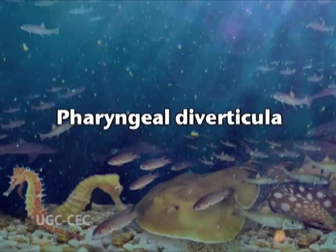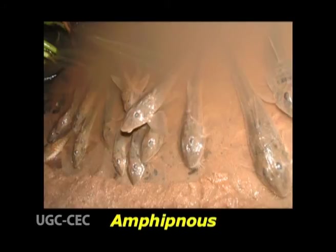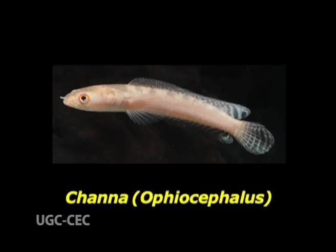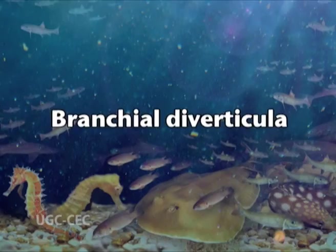Pharyngeal diverticula: these are a pair of simple sac-like outgrowths lined by vascular epithelium extending above the gills. These are very small in Periophthalmus, small and smooth in Amphipnous, and somewhat folded in Channa and Ophiocephalus. The fishes have poorly developed gill filaments and the accessory respiratory sacs serve to breathe atmospheric air during restoration or while coming out of water. The diverticula of Amphipnous (eel) open anteriorly through the mid-ventral gill slit.